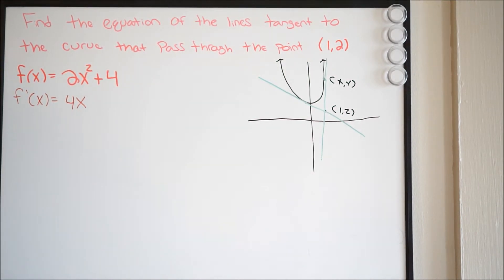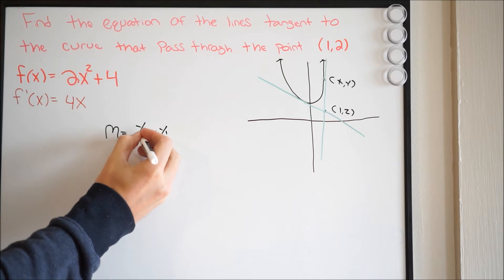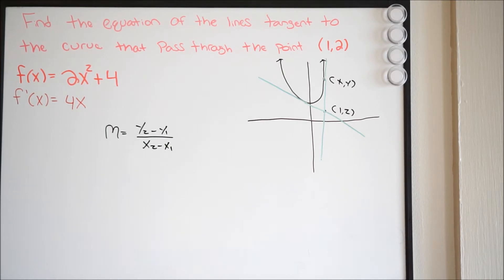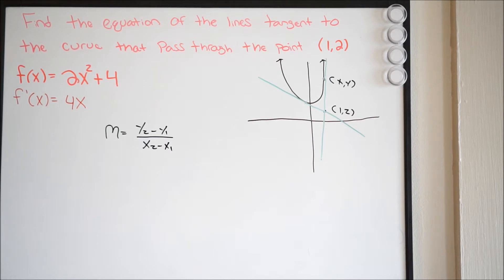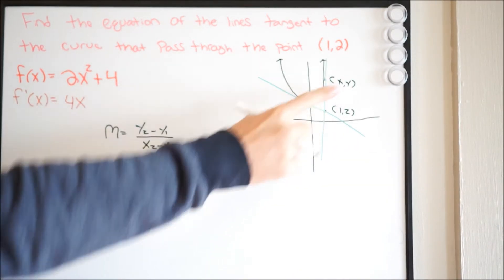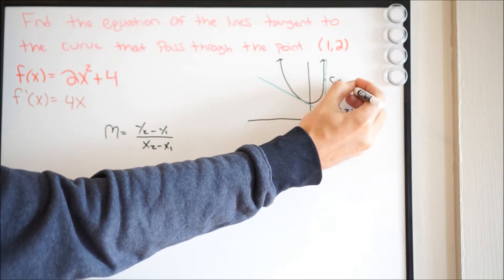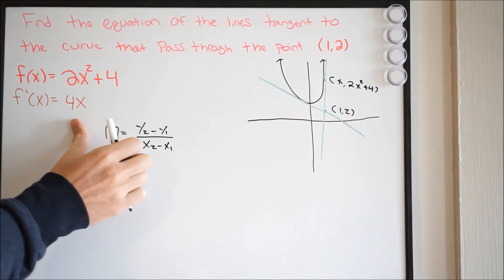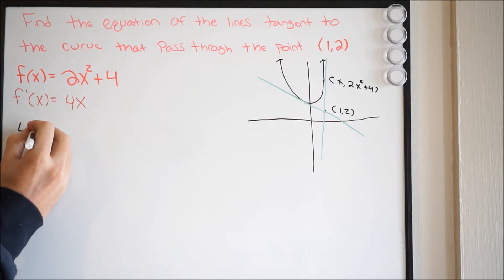Think about how we can find the slope between two points. Slope equals (y₂ − y₁) / (x₂ − x₁). We have our slope of any tangent, which is 4x — that's going to replace m. So the goal is to get everything in terms of x. Notice this y here — I can rewrite that y as 2x² + 4. So I can replace it with 2x² + 4.